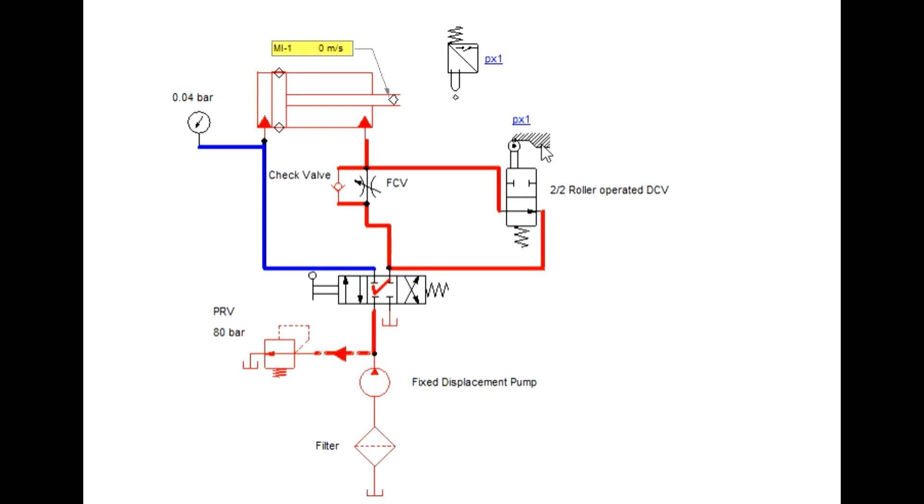This is the mechanical switch which senses the position of rod. When this mechanical switch gets activated, this mechanical system actuates the roller, which presses the roller and the 2 by 2 roller operated valve gets actuated.